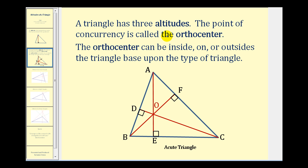A triangle has three altitudes, one from each vertex to the opposite side, and the intersection of the three altitudes — the point of concurrency — is called the orthocenter. Here we see a triangle with its three altitudes constructed, and this point of concurrency or intersection is the orthocenter.